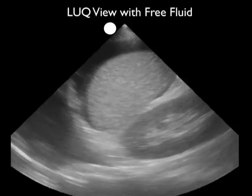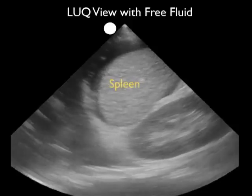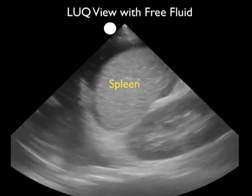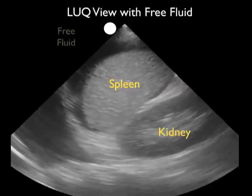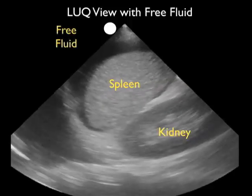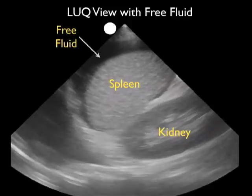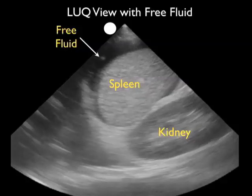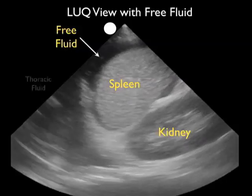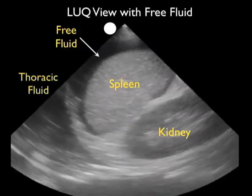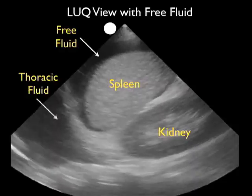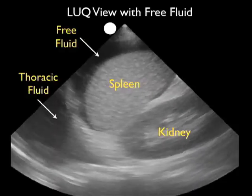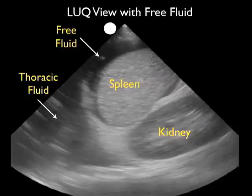Here's an interesting video clip from a trauma patient. Again, we're looking at the left upper quadrant, and we delineate the spleen and kidney. Notice the presence of fresh fluid — the dark or anechoic fluid stripe — layering out superior or anterior to the spleen.